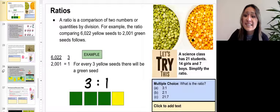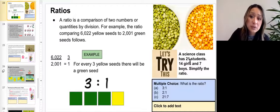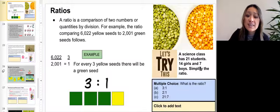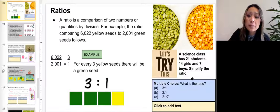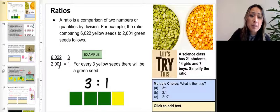On the right-hand side, you get to practice. So a science class has 21 students, 14 girls, and seven boys. Simplify the ratio. What is the ratio? Is it A, three to one, B, two to one, or C, 21 to seven? Type your answer in the box.